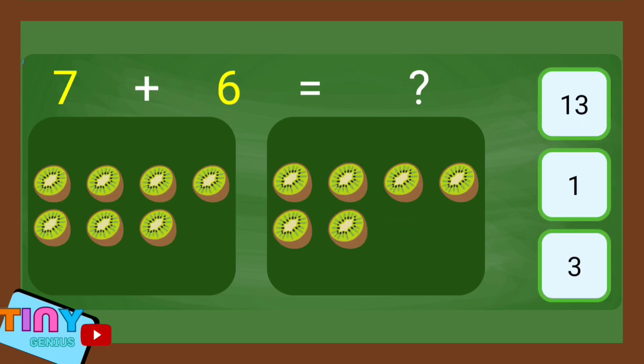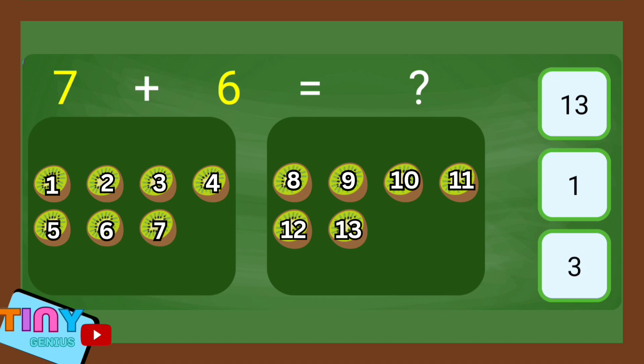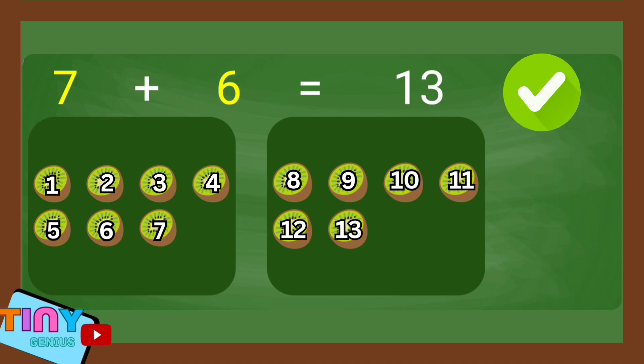7 plus 6 equal. 1, 2, 3, 4, 5, 6, 7, 8, 9, 10, 11, 12, 13.